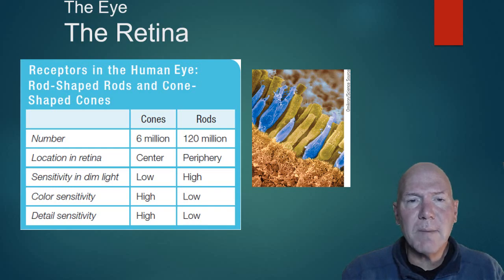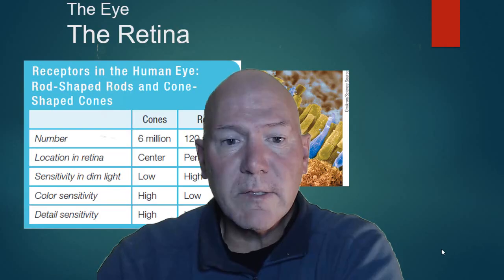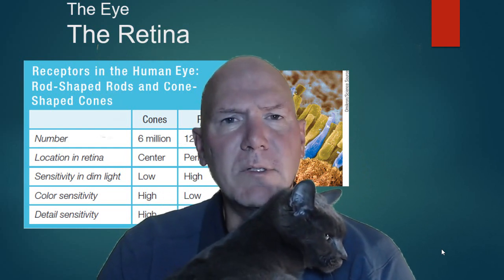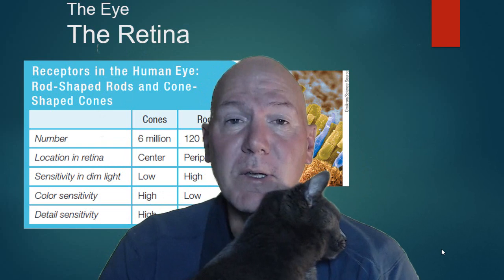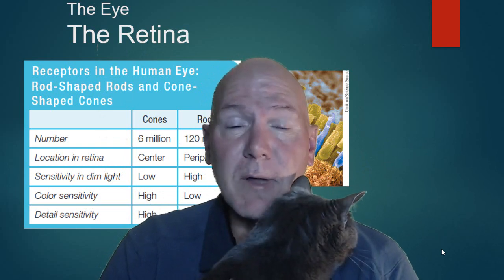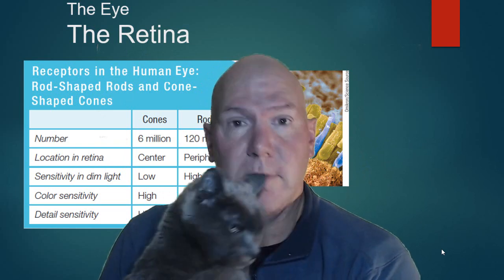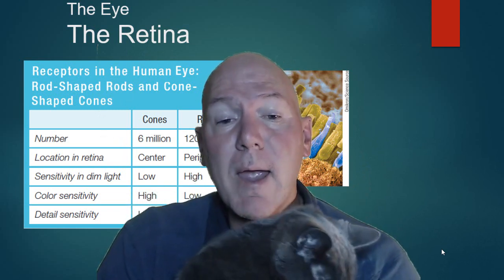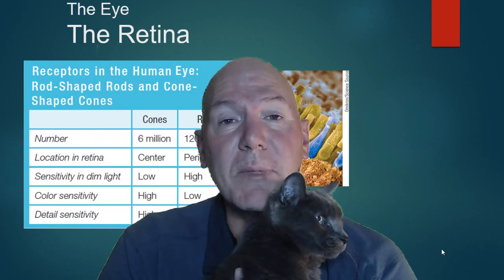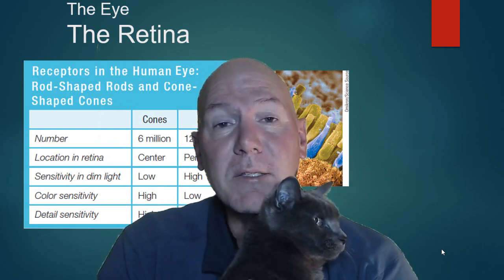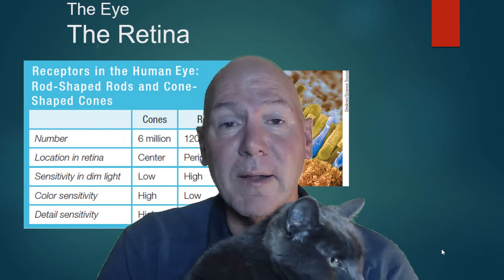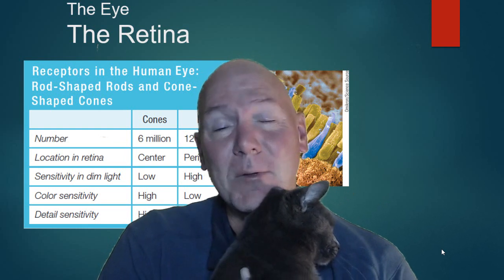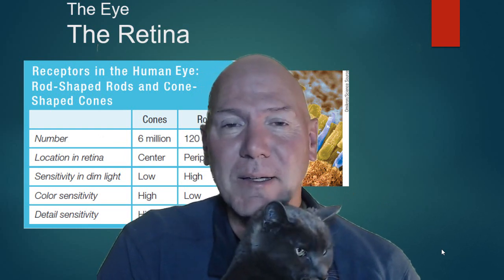Why can a cat see better at night than us? Here's Cougar the cat — cats have way more rods and don't have cones, so they can't see in color. The iris works differently too: their pupils dilate much larger to allow more light in, allowing them to maneuver at night much more easily. They don't see as clearly, but they see well in darker conditions.